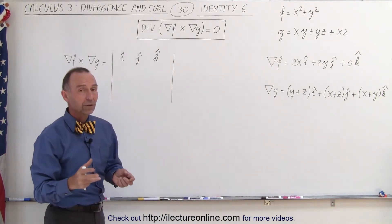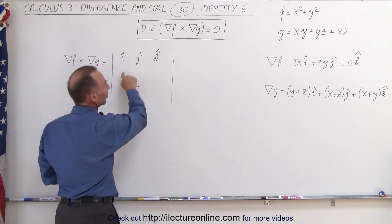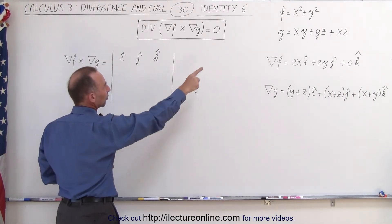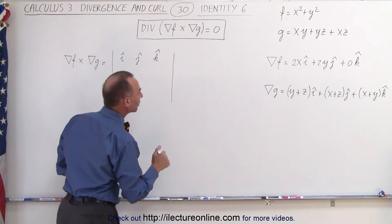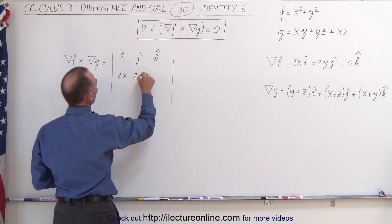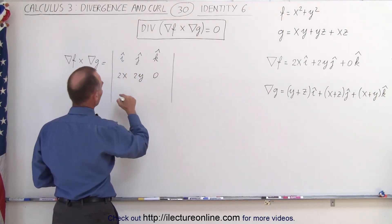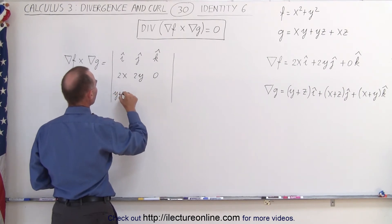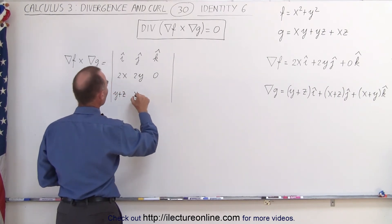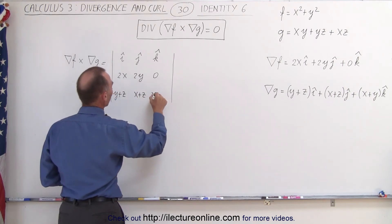Now we find the cross product of those two. We put in the x, y, and z components of the two gradients. The first row gives us 2x, 2y, and zero. The second row gives us y plus z, x plus z, and x plus y.